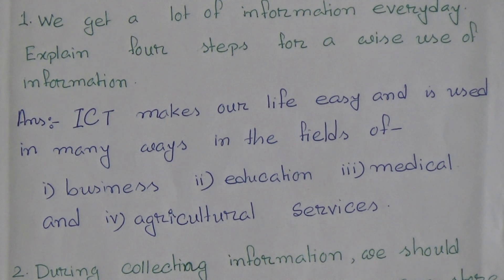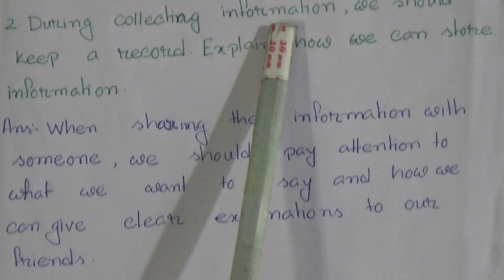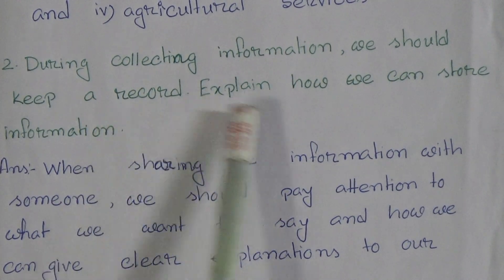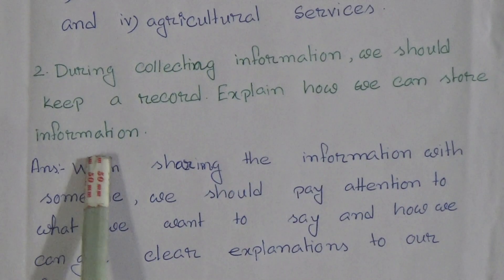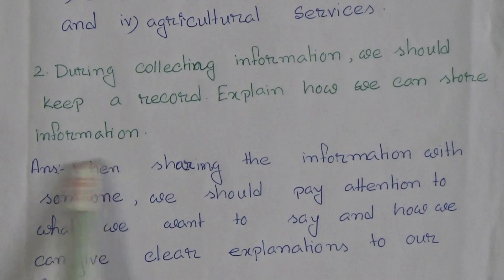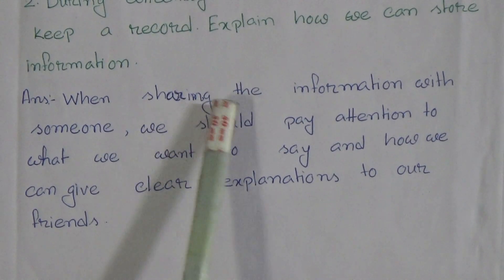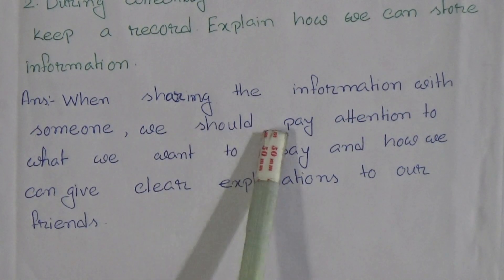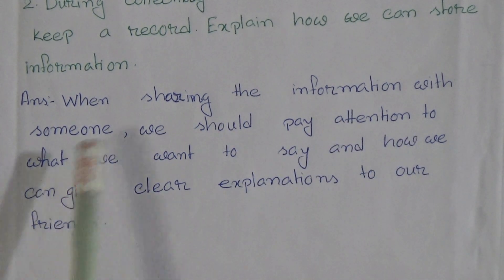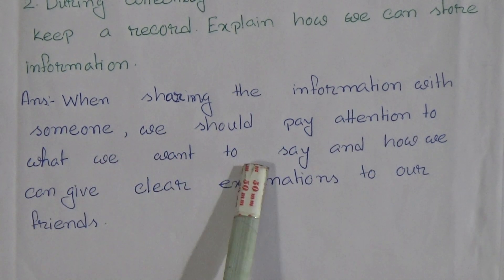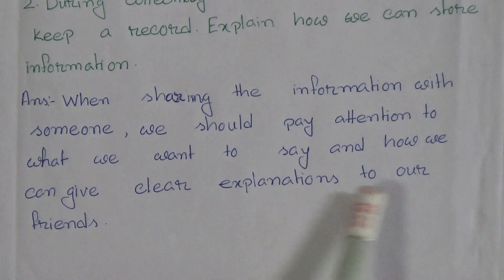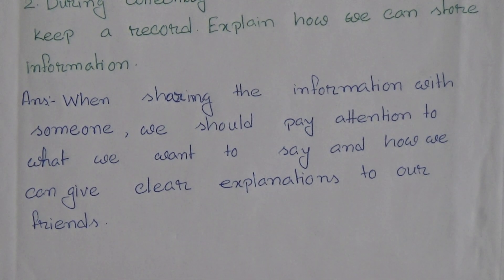Question 2: During collecting information, we should keep a record. Explain how we can store information. Answer: When sharing the information with someone, we should pay attention to what we want to say and how we can give a clear explanation to our friends.